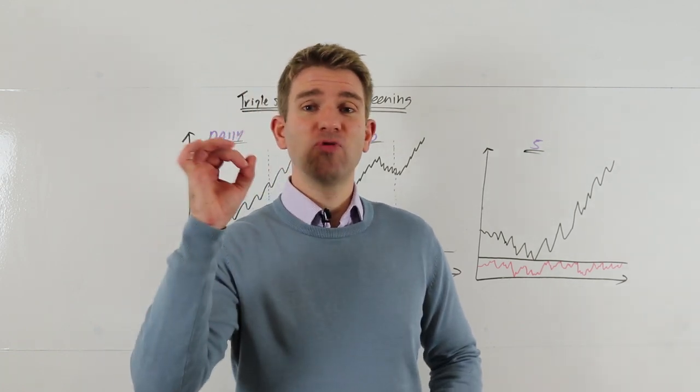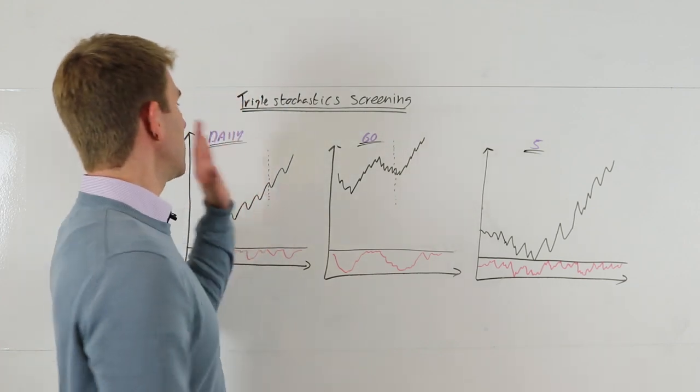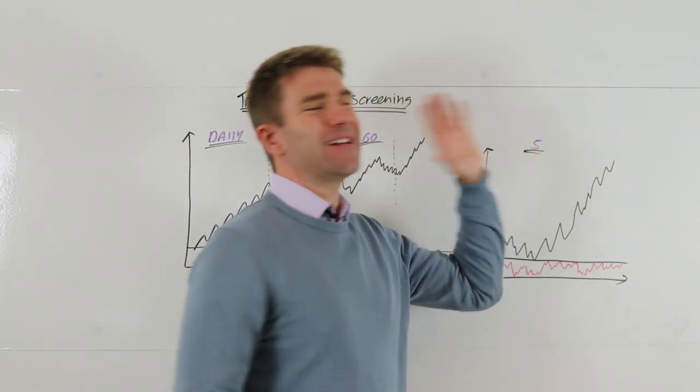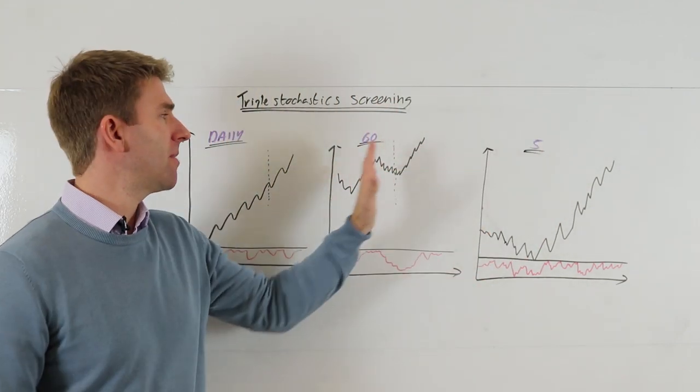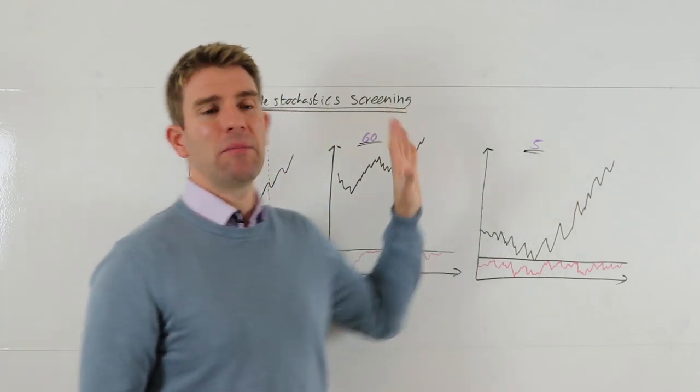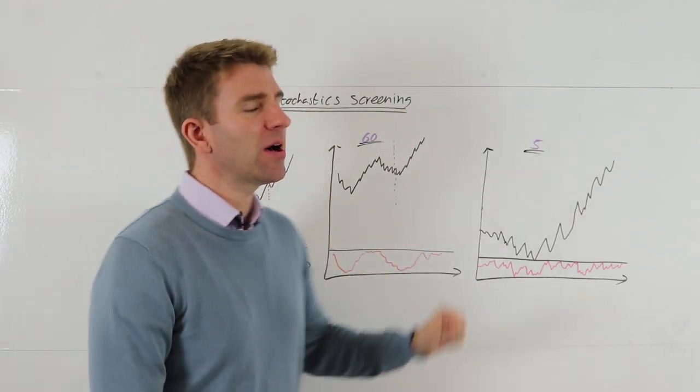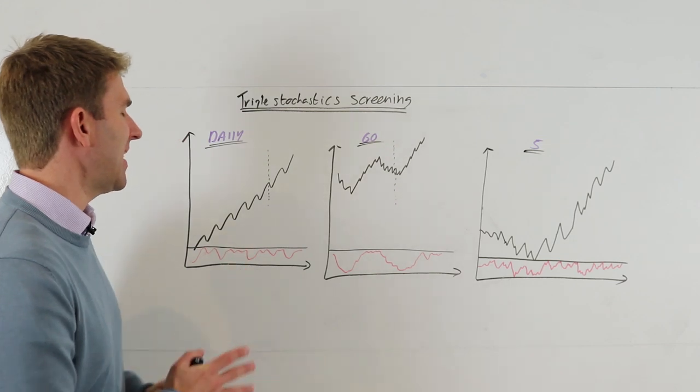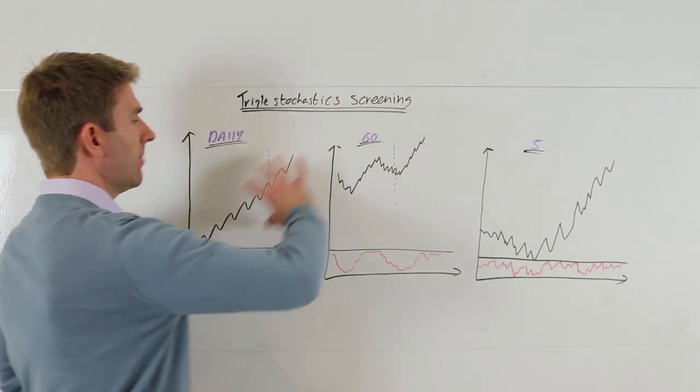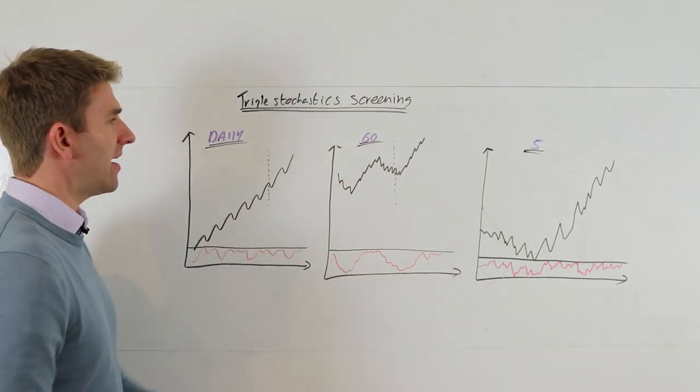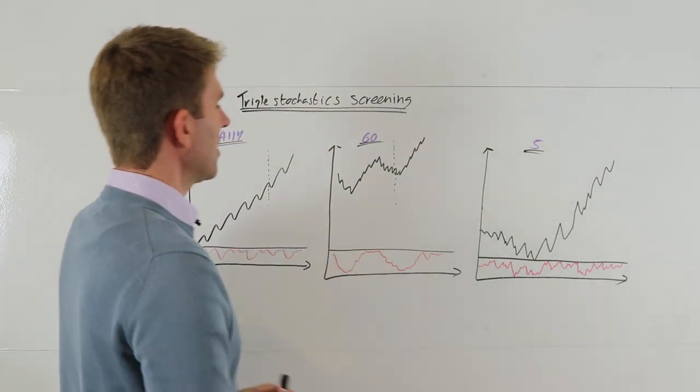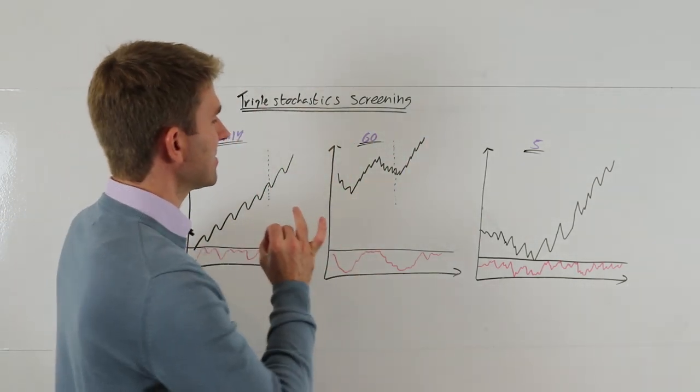Okay, so triple stochastics. Let's have a look: daily chart, 60 minute, five minute. You can play around with this a little bit. Maybe that's a 15, maybe that's a one, or maybe that's a weekly, but we kind of get the idea. So what we're looking at here is the daily chart, big uptrend, no kind of dispute with that.